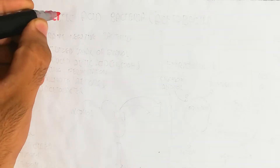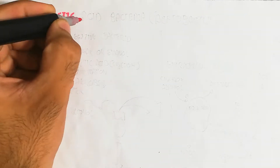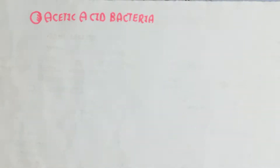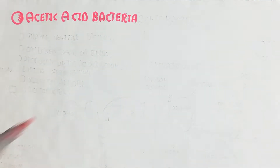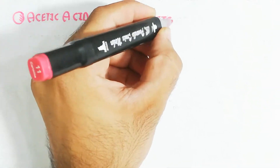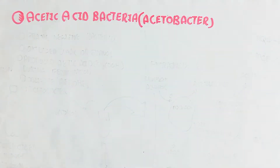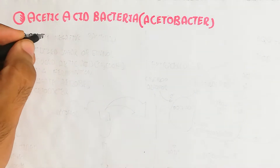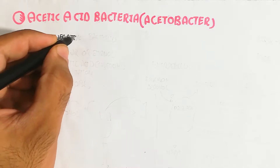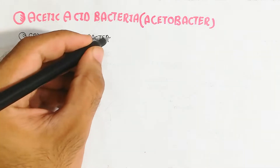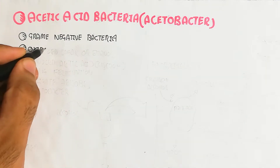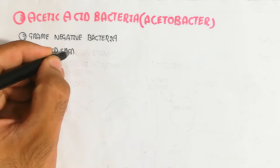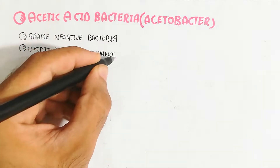In this video we will discuss acetic acid bacteria, also known as acetobacter. We will understand the mechanism of vinegar production — specifically apple cider vinegar. Acetobacter is a gram-negative bacteria that oxidizes sugar or ethanol.